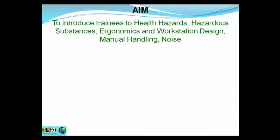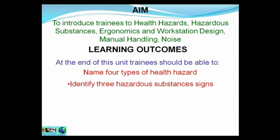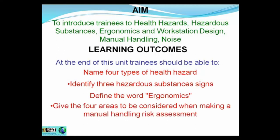The aim of this unit is to introduce you to Health Hazards, Hazardous Substances, Ergonomics and Workstation Design, Manual Handling and Noise. And by the end of this unit you should be able to name four types of health hazard, identify three hazardous substance signs, define the word ergonomics, give the four areas to be considered when making a manual handling risk assessment, and define noise.